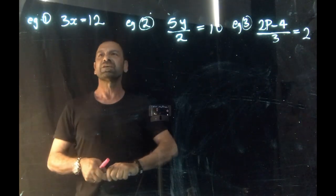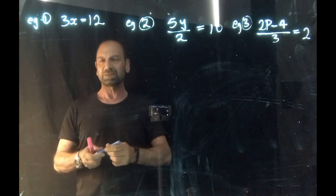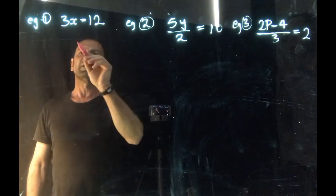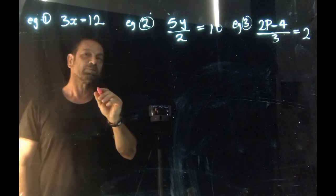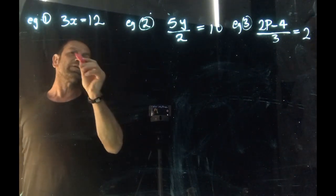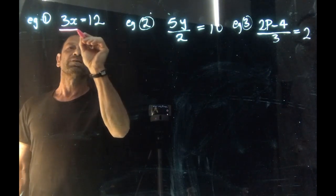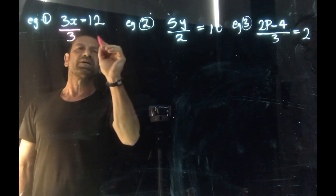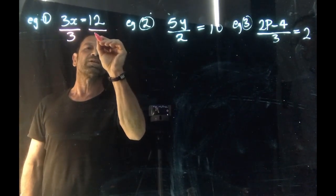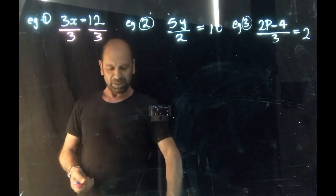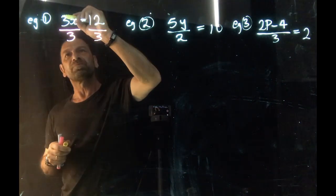So we've got 3x equals 12, the variable being x. To begin with, what we need to ask ourselves is the operation that's occurring between the 3 and the x is multiplication. So we need to perform the reverse or the opposite operation, which is divided by 3. We have to ensure that we do that to both sides. That allows us to cancel the 3s.